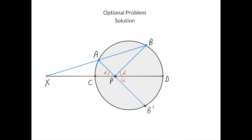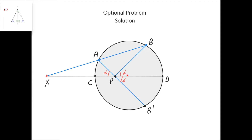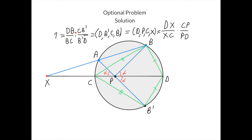Here's the solution. First, I'm going to continue the line AP such that it intersects the circle at the point B'. Then, since this angle is alpha, we know that this angle is also alpha. And now, because this angle is alpha and this angle is alpha, and the circle is symmetric with respect to the line CD, and the line PB is symmetric to the line PB' also with respect to the line CD, then the points B and B' must be symmetric with respect to the line CD. This means that triangles CDB and CDB' are congruent, and therefore BC equals B'C.